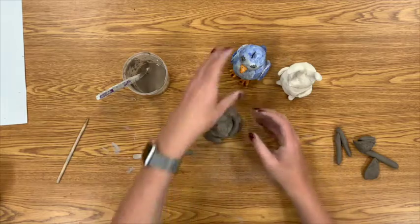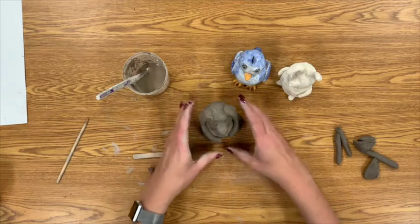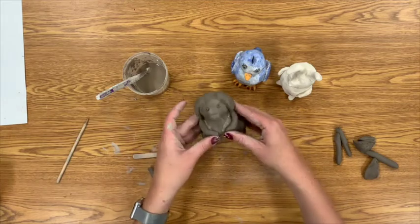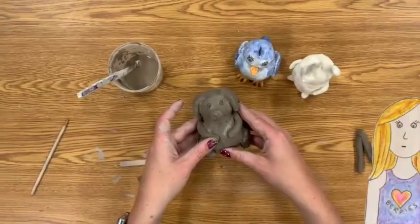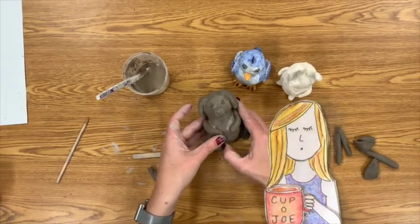So somewhere on your sculpture, you're also going to have to add a hole. It could be on the bottom. It could be the eyes. It could be the mouth. Don't be gross about it, but you need a way for air to get in and out so that your clay project dries properly.